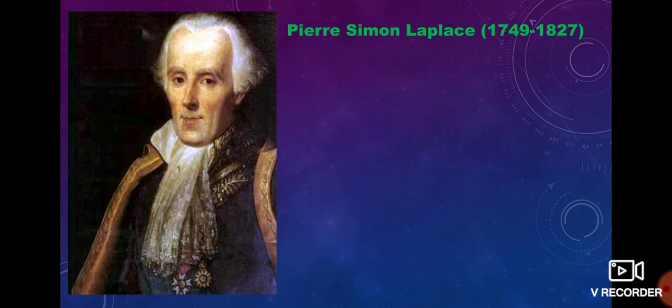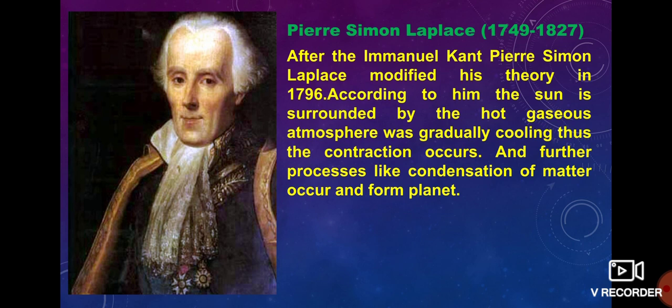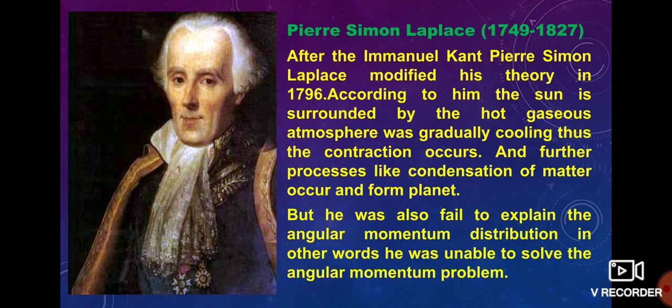After Kant, P. S. Simon Laplace modified Kant's theory in 1796. According to him, the Sun is surrounded by a hot gaseous atmosphere. By gradually cooling, contraction occurs, and further processes like condensation of matter lead to the formation of planets. But he also failed to explain the angular momentum distribution — in other words, he was unable to solve the angular momentum problem.